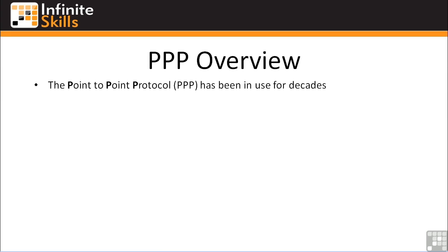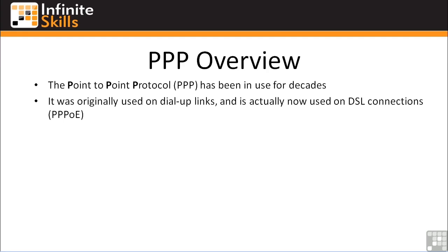The Point-to-Point Protocol has been in use for decades — since at least the mid-80s. That's when I started messing around with computers and remember dial-up internet using the Serial Line IP, or SLIP protocol, and PPP. And it's not outdated by any stretch of the imagination. In fact, it's still used on some DSL connections today. PPPoE — the Point-to-Point Protocol over Ethernet — is used by your DSL router or modem to connect to your DSL provider.